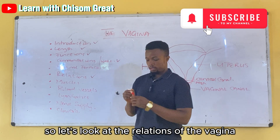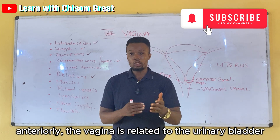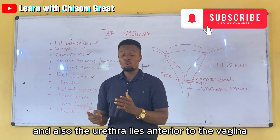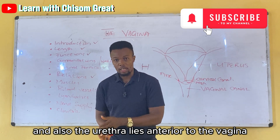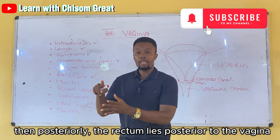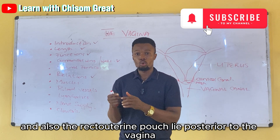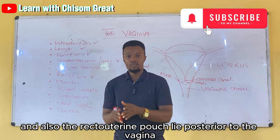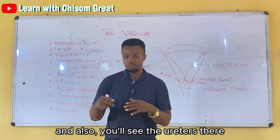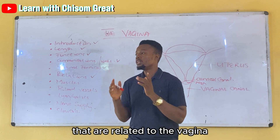Anteriorly, the vagina is related to the urinary bladder and also the urethra, both of which lie anterior to the vagina. Posteriorly, the rectum and the anal canal lie posterior to the vagina, and also the recto-uterine pouch lies posterior to the vagina. Laterally, on both sides, you have the levator ani and also the ureter.